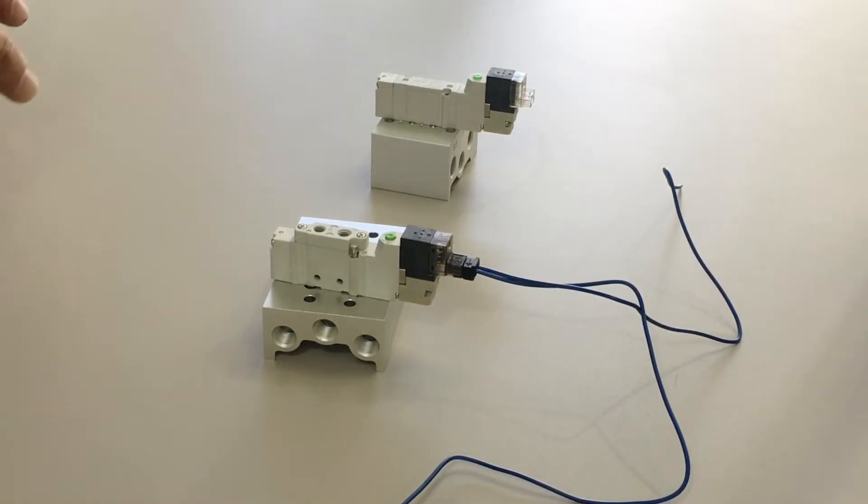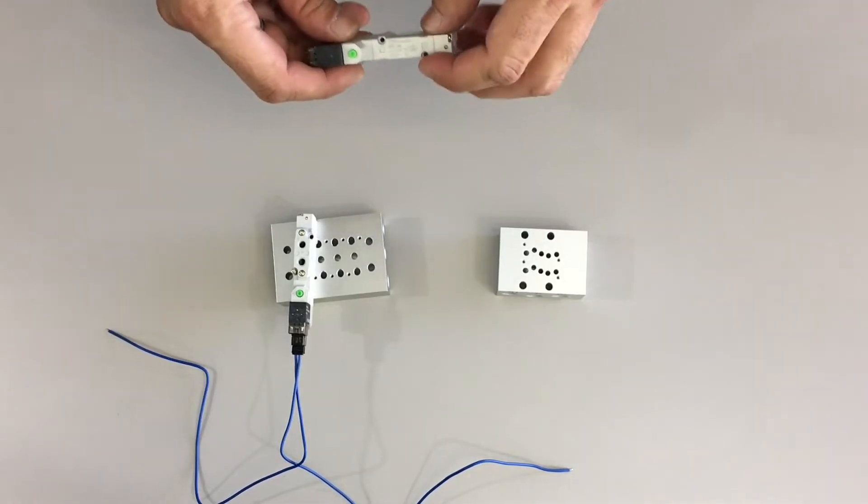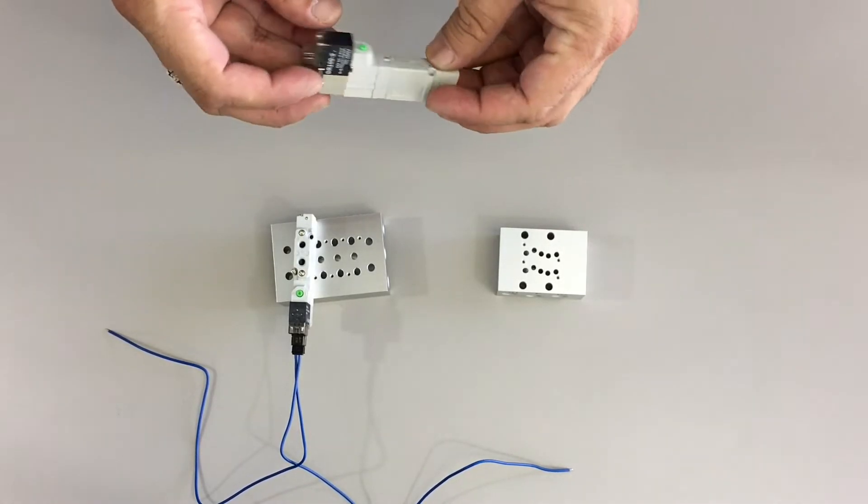There are five configurations: single solenoid, double solenoid, closed center, exhaust center, and pressure center.